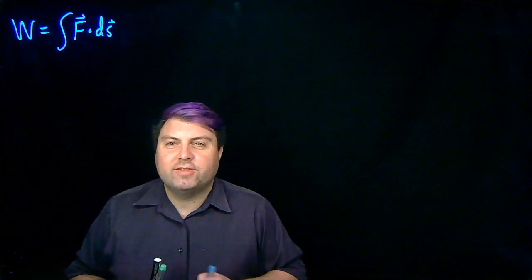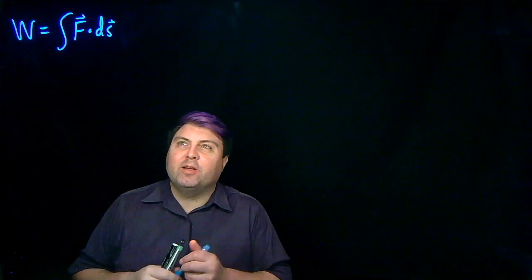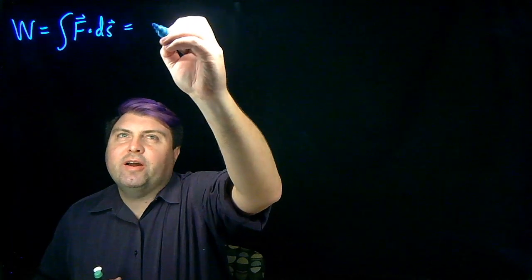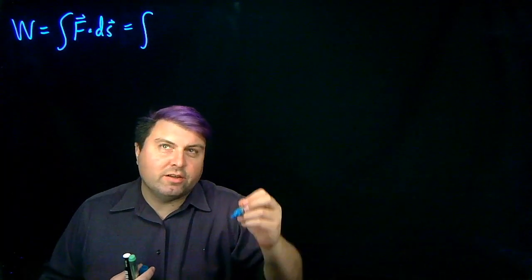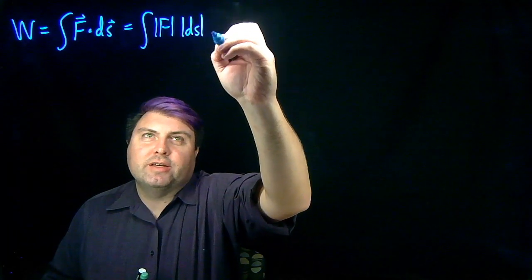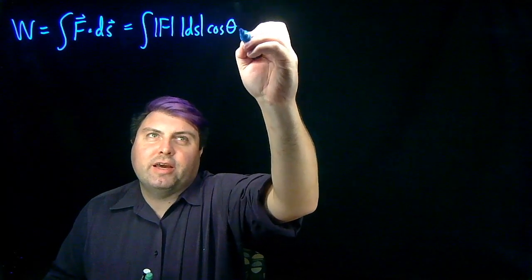We have our new concept of work, and it might be a little bit scary with this dot product and two different vectors. So very often we represent it with this scalar form, which is the magnitude of the force times the magnitude of ds times the cosine of the angle between them.